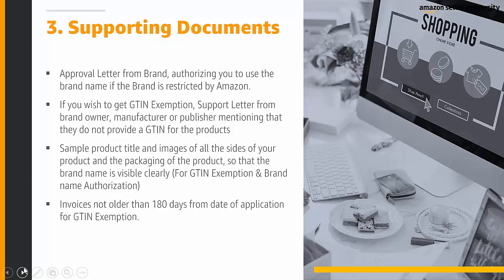Regarding supporting documents: you need an approval letter from the brand authorizing you to use the brand name if the brand is restricted by Amazon. For GTIN exemption, you need a support letter from the brand owner, manufacturer, or publisher stating they do not provide a GTIN for the product, along with a sample product title and three-sided images of the product and packaging showing the brand name clearly. An invoice not older than 180 days from the date of application is also required for GTIN exemption and brand name authorization.